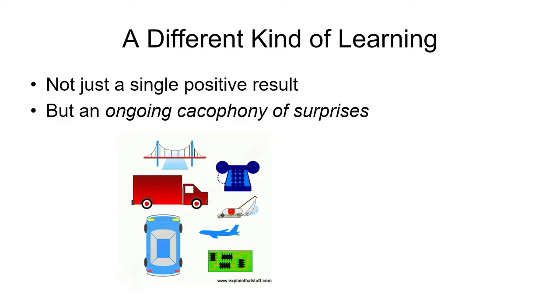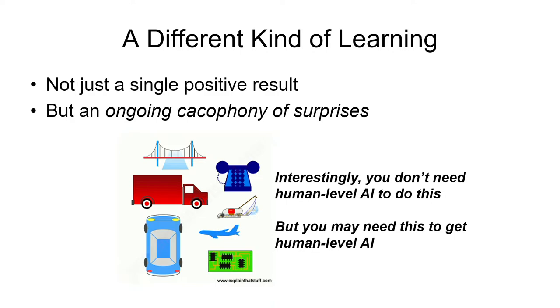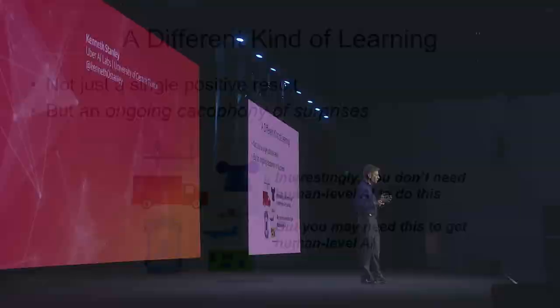When you look at a picture like this, you say, look at all this stuff — this took a lot of intelligence. But it's interesting to consider that you don't have to have human-level intelligence to do this, and yet you may need to have this kind of algorithm to get human-level intelligence.